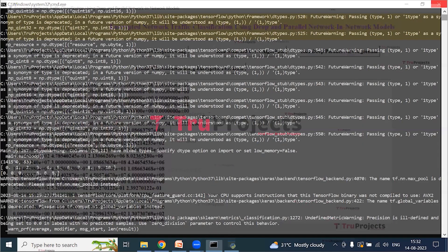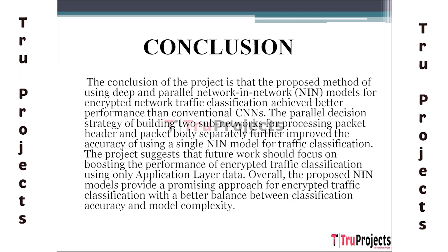The final conclusion: according to the project's findings, deep and parallel network in network (NIN) models performed better than traditional CNN when used to classify encrypted network data. The accuracy was further enhanced by the simultaneous decision method of establishing two sub-networks for processing packet header and packet body separately. Future research should concentrate on improving performance using only application layer data. The suggested NIN model offers a promising method for categorizing encrypted communication with a better balance between classification accuracy and model complexity.